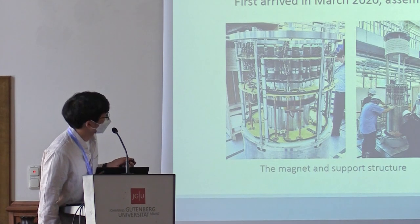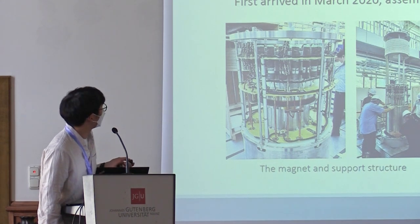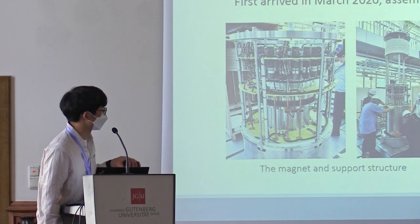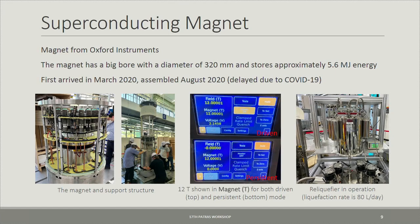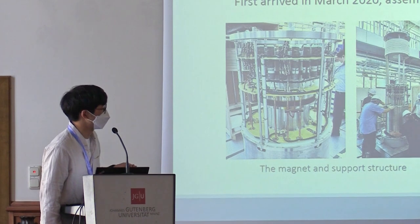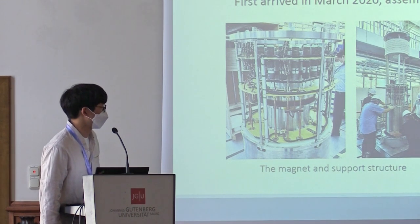The superconducting magnet from Oxford Instruments has a large bore of 320 mm. Although slightly delayed due to COVID, it was installed in 2020 and can reach 12 tesla in both driven and persistent modes. For the first results, data was taken starting in driven mode before switching to persistent mode. We also have a helium reliquefier in operation to conserve liquid helium, since the dilution fridge is a wet type.